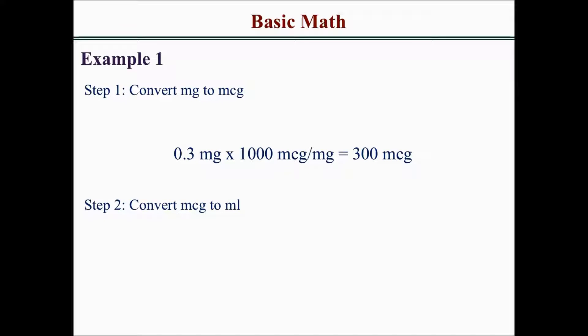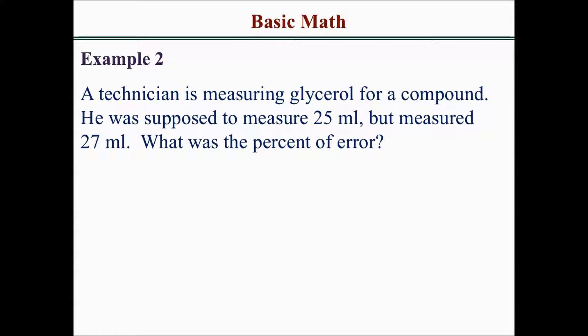Next, convert the micrograms to mls. Since there are 500 micrograms in every 4 mls, 300 micrograms equals 2.4 mls. Example 2: A technician is measuring glycerol for a compound. He was supposed to measure 25 mls but measured 27 mls. What was the percent of error?